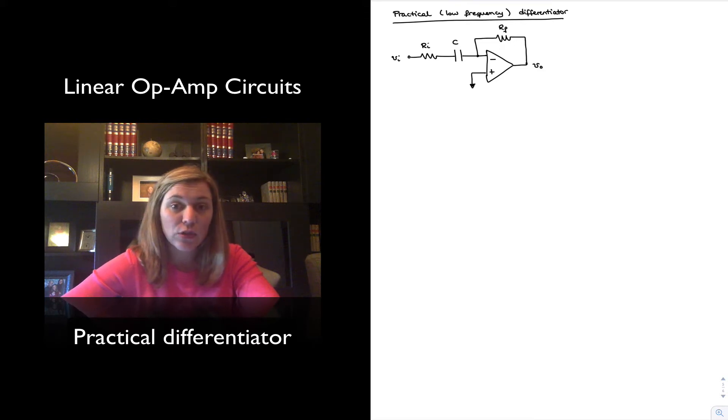By looking at the circuit you can see that it looks very similar to the ideal differentiator circuit, with the exception that we have added a resistor in series with the capacitor labeled Ri.